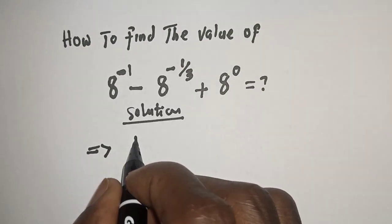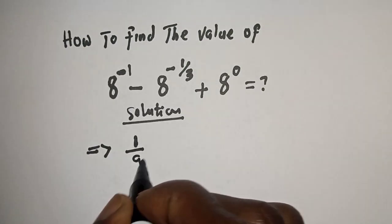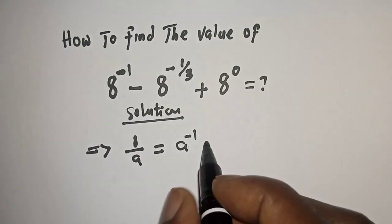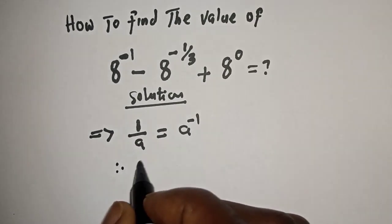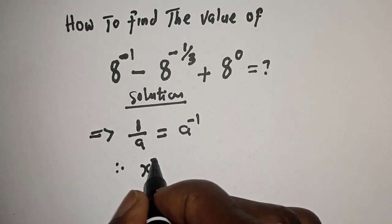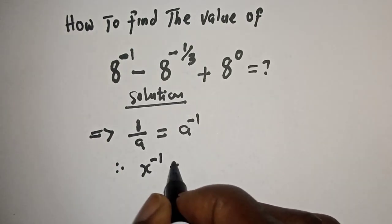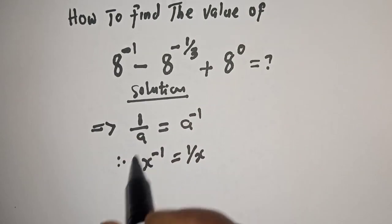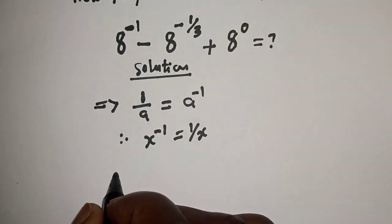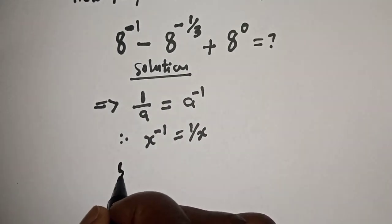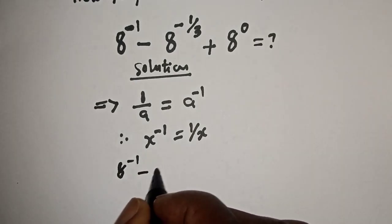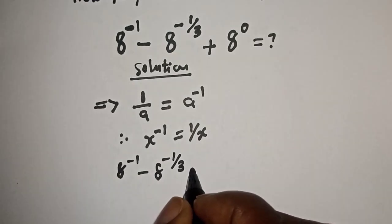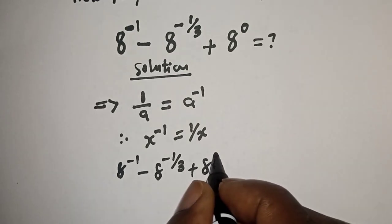Remember, if you have 1 over a, this is equal to a raised to power minus 1. Therefore, a raised to power minus 1 is equal to 1 over a. Now let's consider this: we have a raised to power minus 1, minus a raised to power minus 1 over 3, plus a raised to power 0.